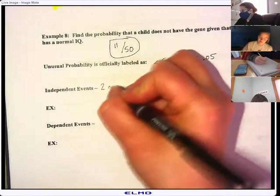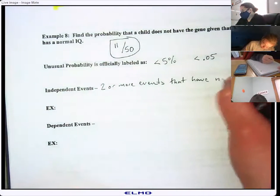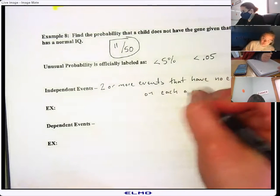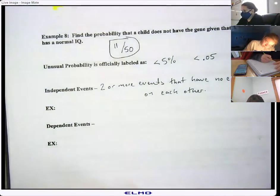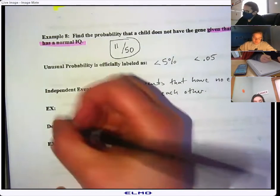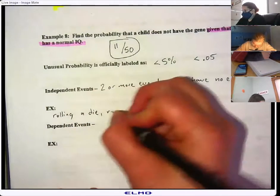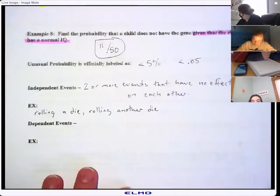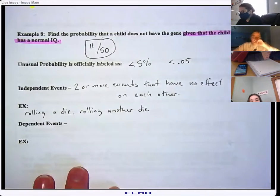Independent events are two or more events that have no effect on each other. An example of that would be rolling a die and rolling another die. People who gamble really like to say if they haven't gotten a six for a while, oh I'm due for a six, but that's not true. Your past rolls have nothing to do with your current rolls.